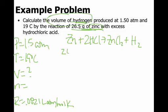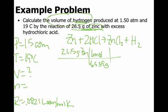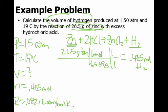So just like before, 26.5 grams of zinc, convert that to moles first. So 1 mole of zinc is 65.39 grams. Mole ratio between zinc and H2 is 1 to 1. So I end up with 0.405 moles of H2. So that goes down here, 0.405 moles.